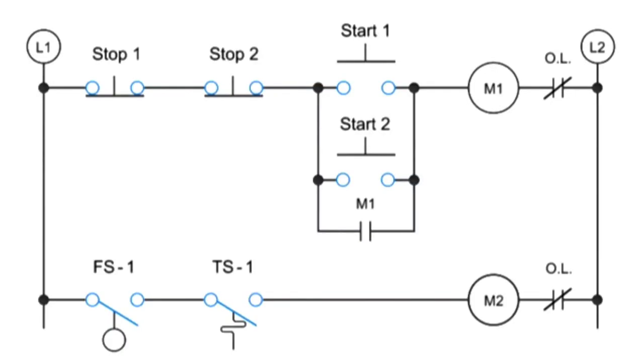Schematic diagrams with graphical symbols are used to show the electrical connections and functions of a specific circuit. This line, or ladder diagram, shows various electrical components interconnected by lines. These lines are arranged like rungs on a ladder.